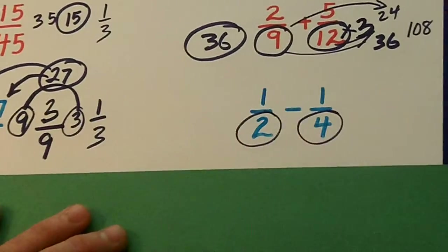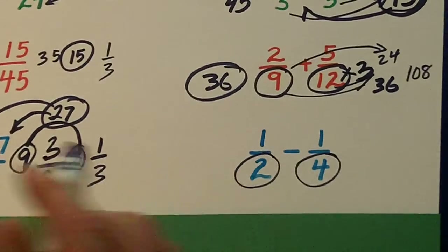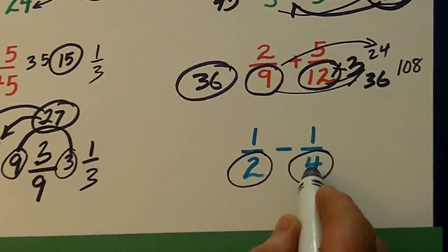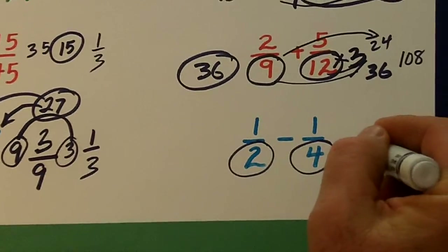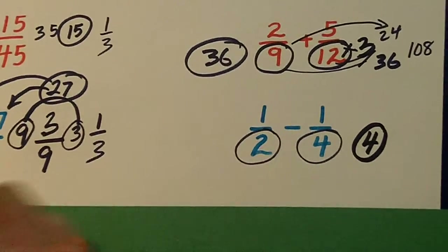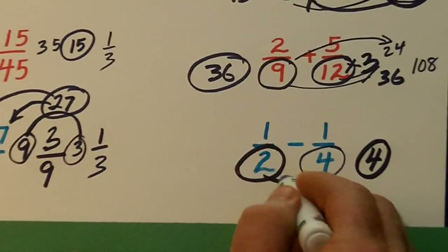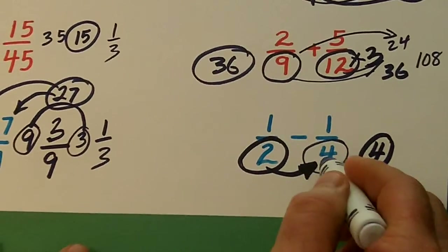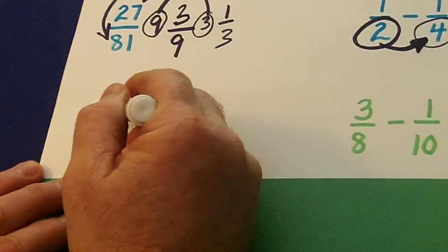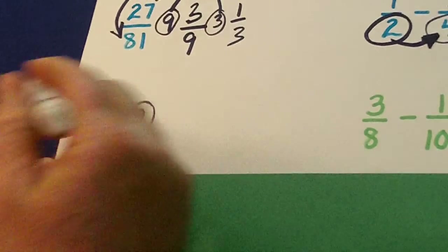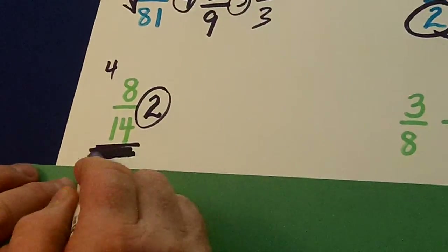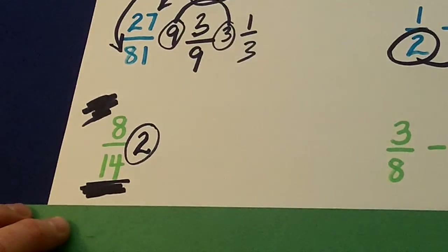Here the denominators are 2 and 4. The first question I always ask myself: can 2, the small one, go into the big one 4? If the answer is yes, the least common multiple is 4. But that only works when the smaller number can be divided evenly into the bigger number. For 8 over 14, 2 is the greatest common divisor — 4 can go into 8, but 4 can't go into 14.